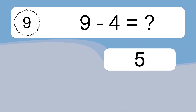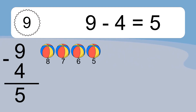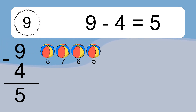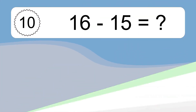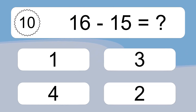7 minus 6 equals 1. Let's count it: 6, 5, 4, 3, 2, 1. 9 minus 4 equals what?